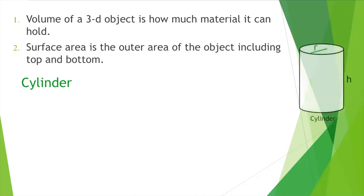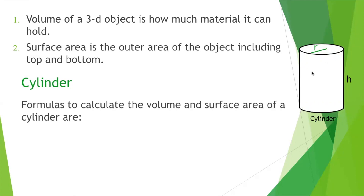Cylinder — a cylinder looks like a can of soda. It has a top surface and bottom; top and bottom are circles, and inside can be hollow or solid. So to calculate the volume and surface area of a cylinder, we can use formulas.